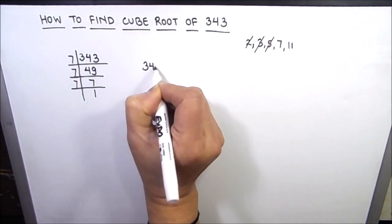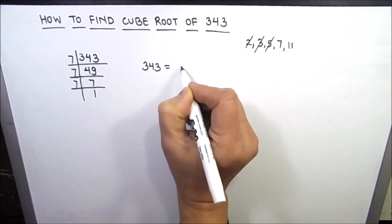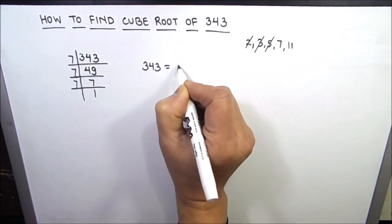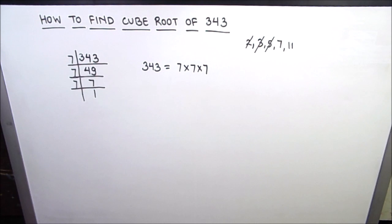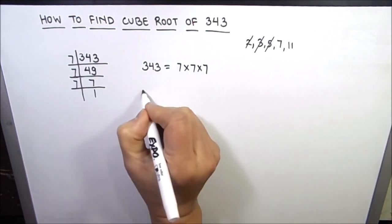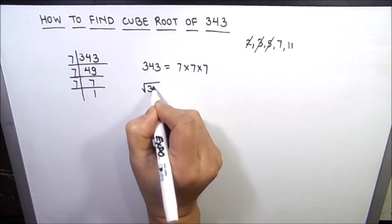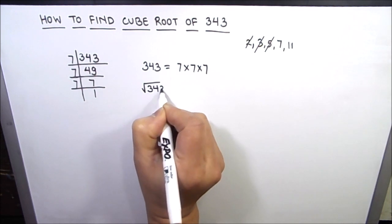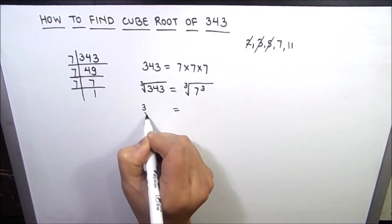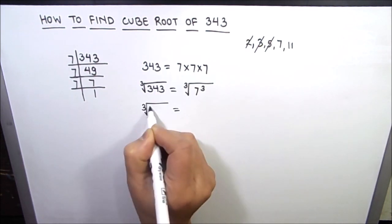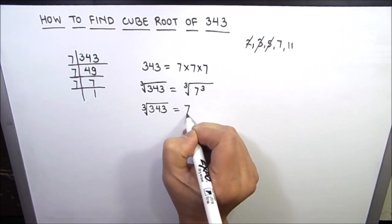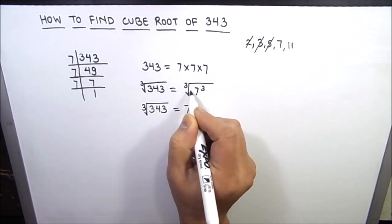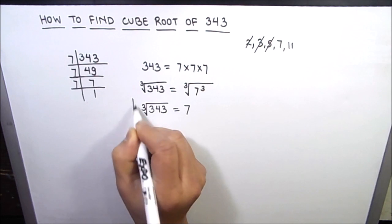So the prime factors of 343 are 7 × 7 × 7. Now, as we are finding the cube root of the number, we are going to take the cube root on both sides. So the cube root of 343 equals the cube root of 7³, which is 7.